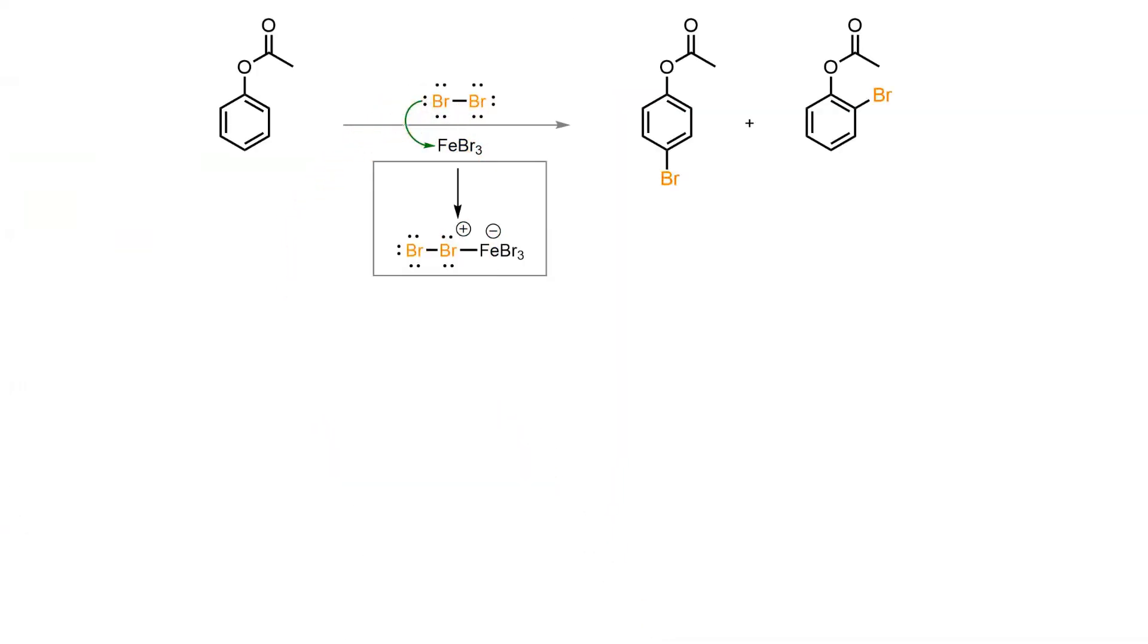Firstly, bromine donates a lone pair to the Lewis acid to form an activated electrophilic complex. Since phenol acetate is not as activated as phenol itself, the catalyst is required here.